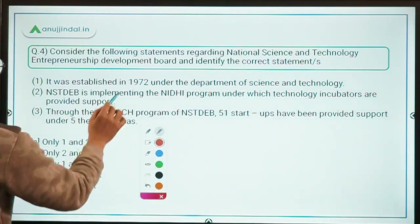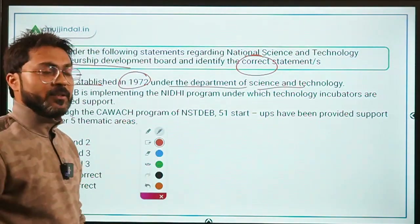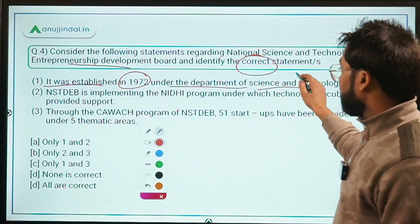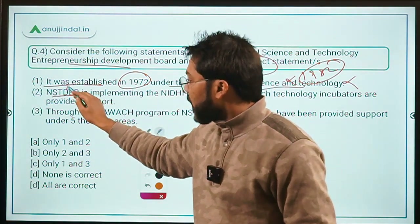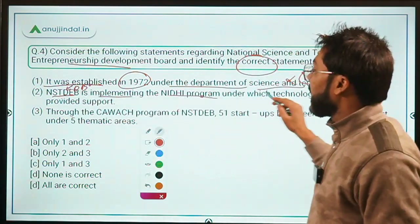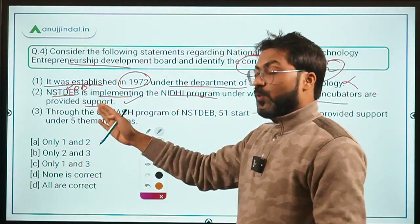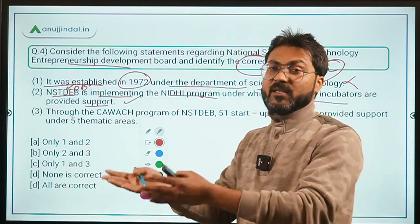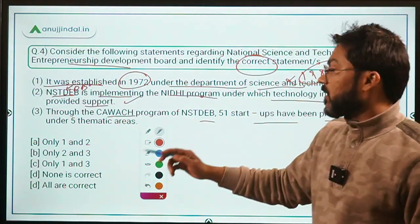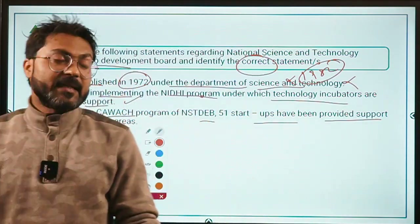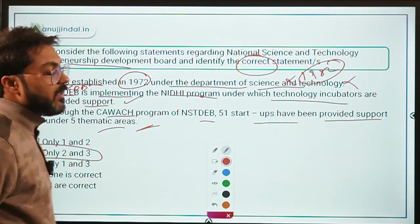Back to Question 4 — identify the correct statements. Statement 1 says the board was established in 1972 — this is incorrect; it was established in 1982. Statement 2 says NSTEDD is implementing the Nidhi program under which Technology Business Incubators are provided support — this is correct. Statement 3 says through the Kavaj program, 51 startups have been supported under five thematic areas related to COVID-19 — this is also correct. Therefore, option B — only statements 2 and 3 — is the correct answer.